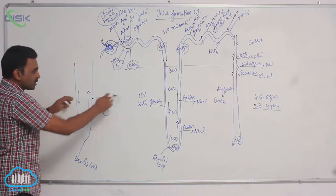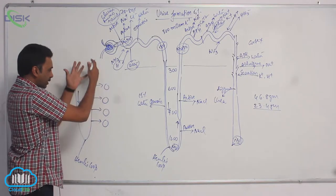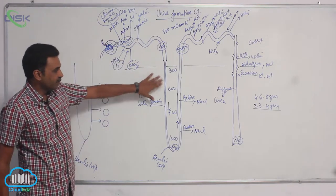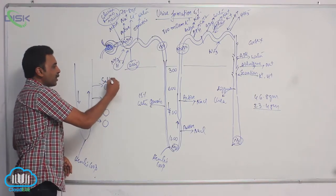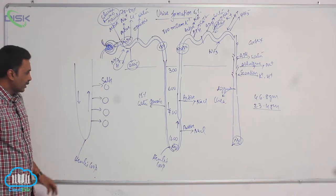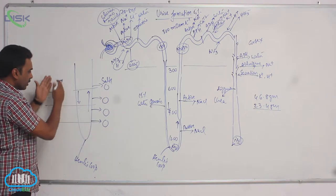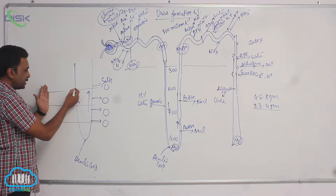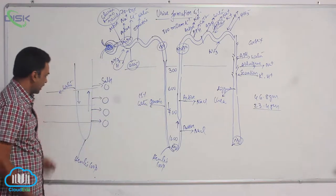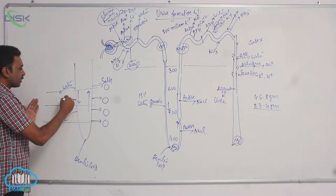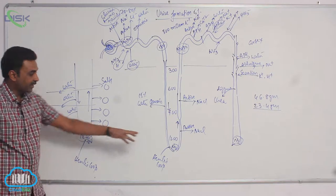The concentration in the medullary interstitium is due to the salts pumped outside from the ascending limb of the Loop of Henle. Because of this higher salt concentration outside, water leaves the descending limb by osmosis as it travels downward, and gradually the fluid becomes isotonic by the time it reaches the hairpin bend of the Loop of Henle.